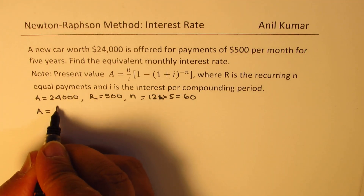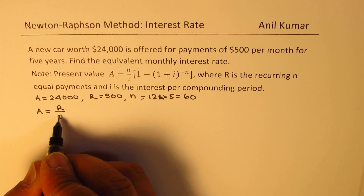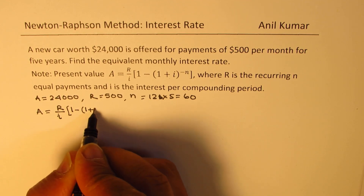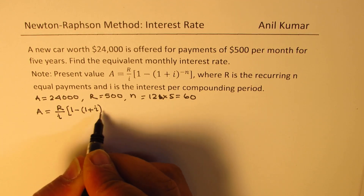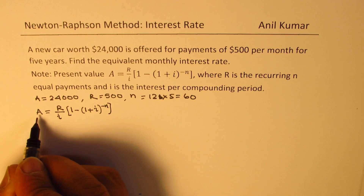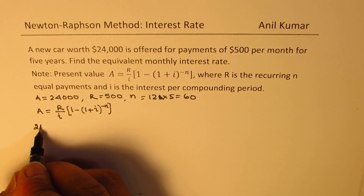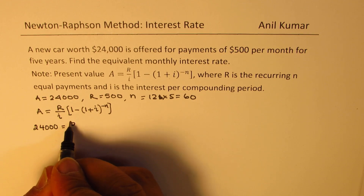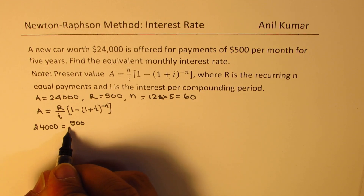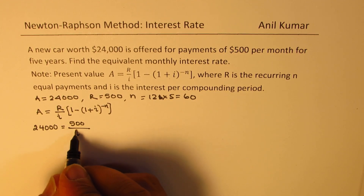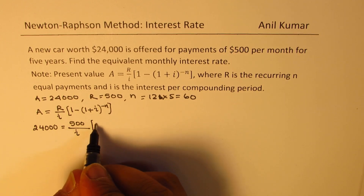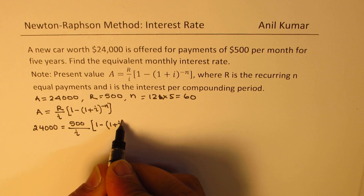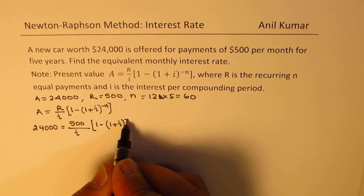Substituting these values into the annuity formula, we get: 24,000 equals 500 over I, within brackets: 1 minus (1 plus I) to the power of minus 60. Here I is the monthly interest rate we need to find.